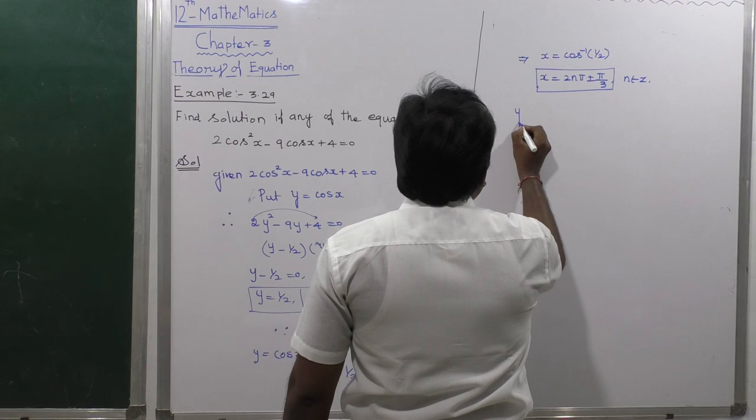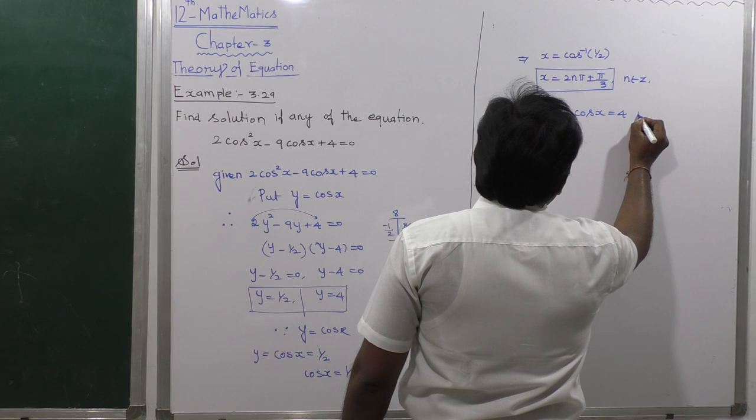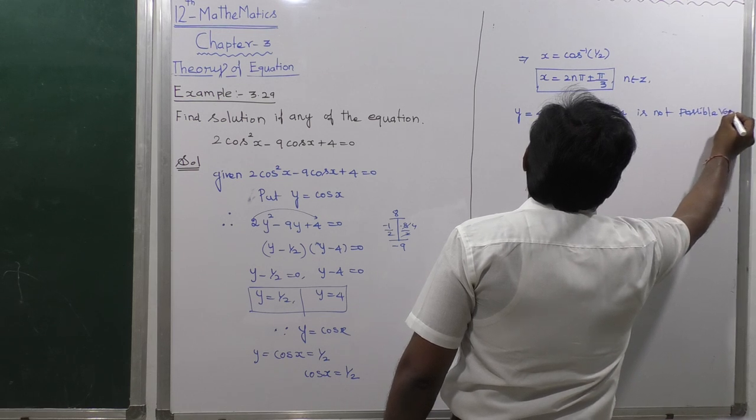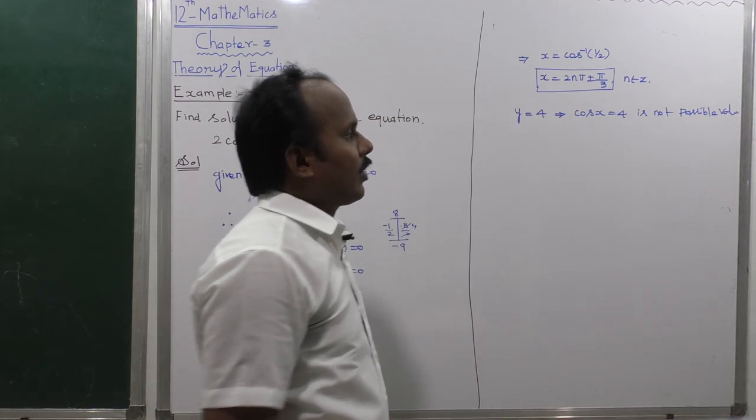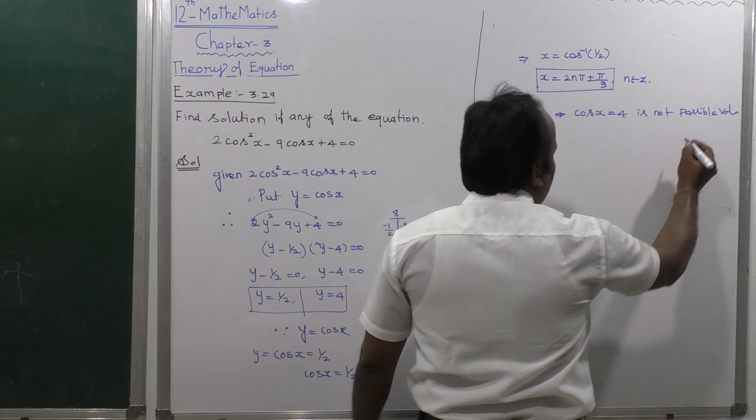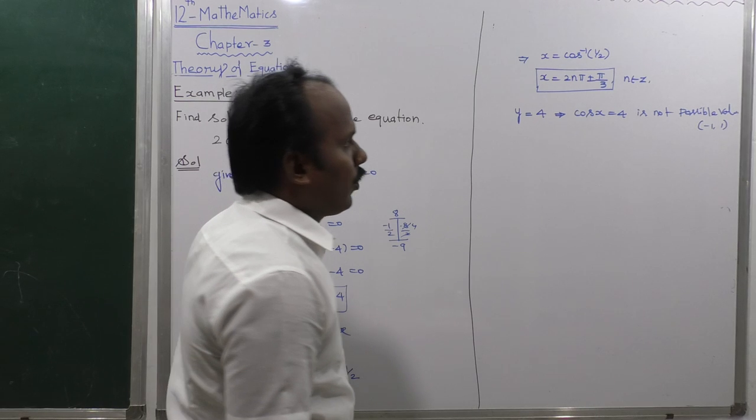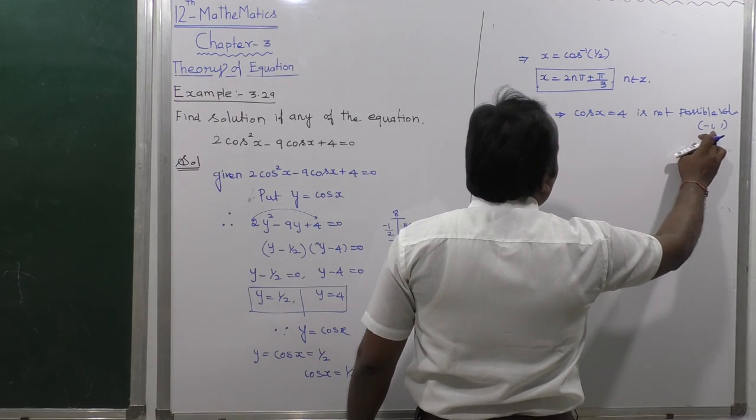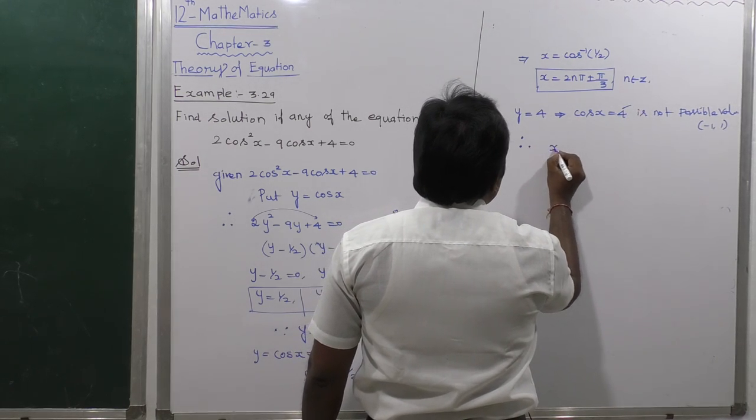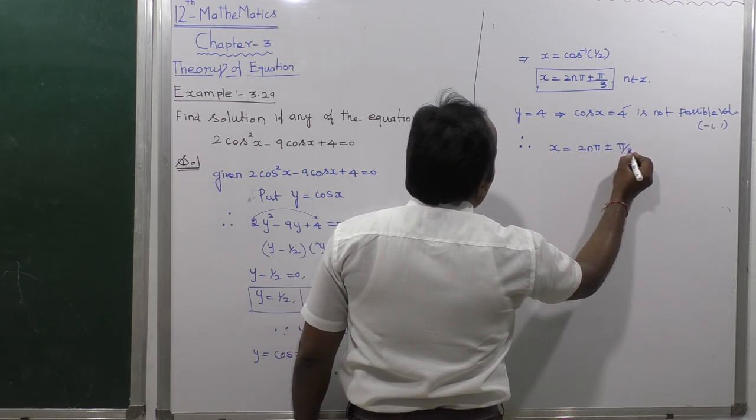Next, y = 4, which implies cosx = 4, is not a possible value. Why? Because the principal values of cosθ are in the interval [-1, 1]. So 4 is not an included value. Therefore, x = 2nπ ± π/3 is the answer.